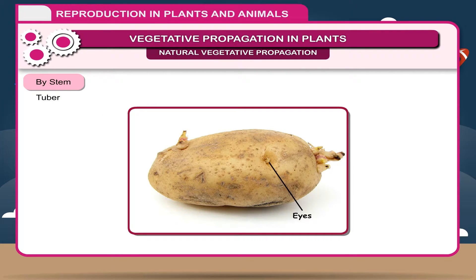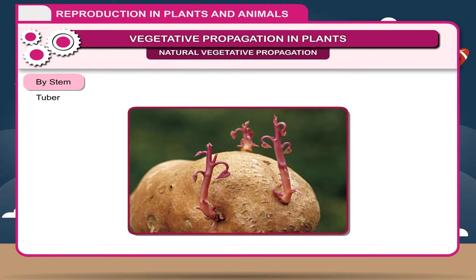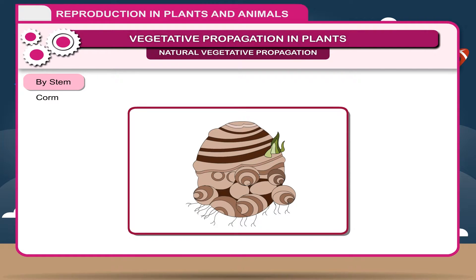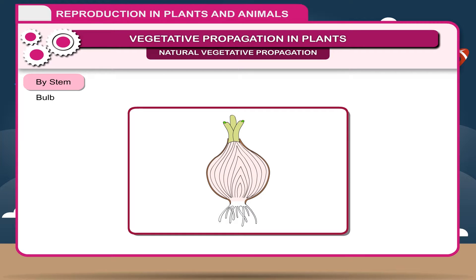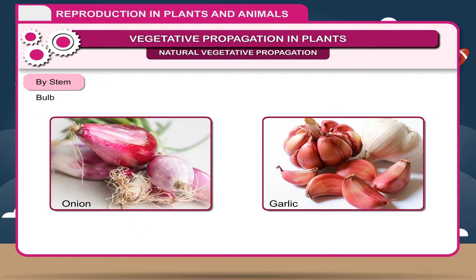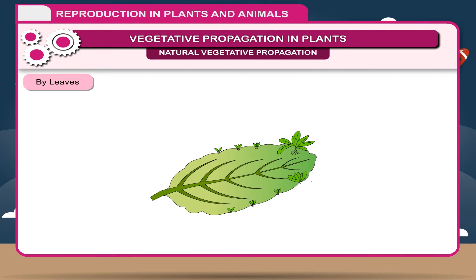Tuber. Potatoes have eyes or depressions where buds are present. Each bud gives rise to a new plant. Young plants developing from the tuber buds are nourished from starch stored in the tubers until mature enough to develop root systems. Corm is a modified underground stem which is short and grows vertically in the soil. It has condensed food material and a large apical bud which gives rise to a new plant. Bulb is also a modified underground stem which contains sufficient food materials. It consists of many fleshy leaves and new shoots rise from the bud. For example, onion and garlic.